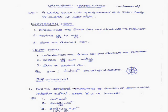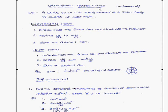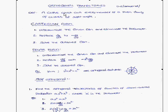Today we are going to discuss orthogonal trajectories. The name itself has some meaning — orthogonality means a 90-degree angle should be there. The definition says that a curve which cuts every member of a given family of curves at right angles is called an orthogonal trajectory.